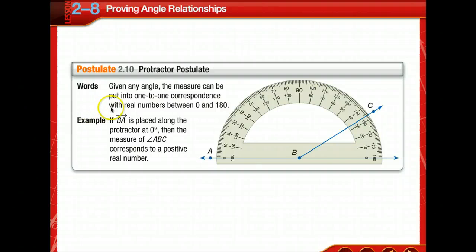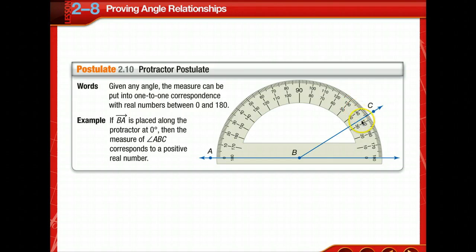First, there's the protractor postulate — another postulate to add to your notes. It simply says that given any angle, the measure can be put into one-to-one correspondence with real numbers between 0 and 180, because that's what the protractor measures.